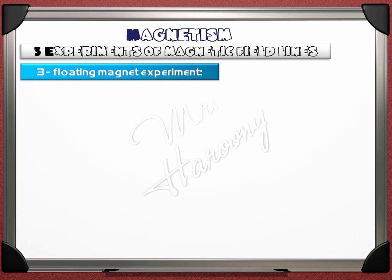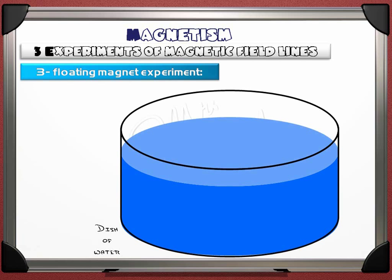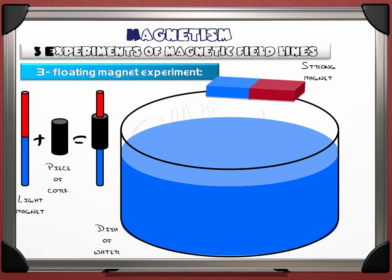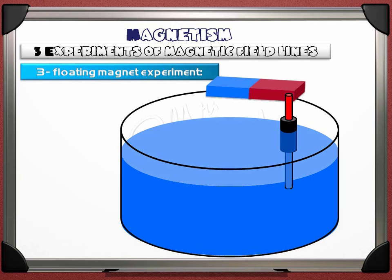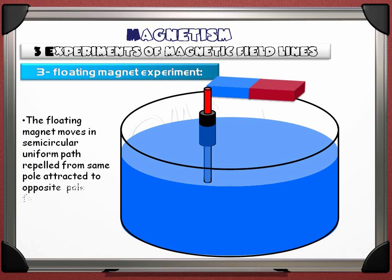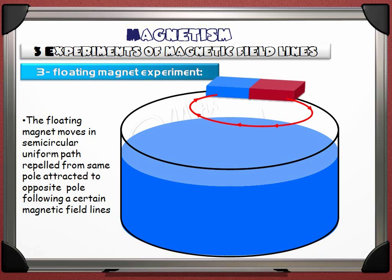Another experiment is the floating magnet. Get a large dish of water, a light magnet, a piece of cork, and a strong magnet. Put the strong magnet on top of the dish. Place the light magnet inside the cork and submerge it with its north pole near the north pole of the strong magnet so they repel. Let the light magnet move freely — it moves in a semicircular uniform path, repelled from the same pole and attracted to the opposite pole, following a specific magnetic field line from north to south.